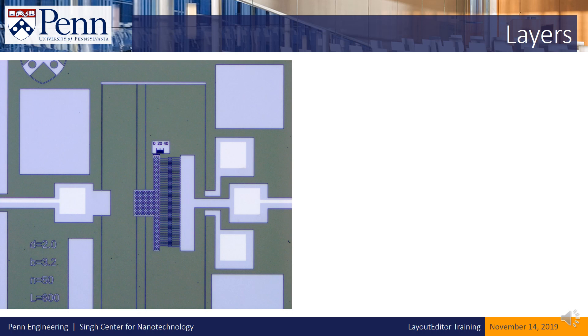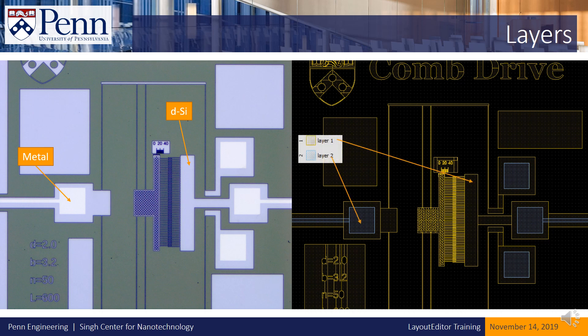The next concept is layers. To understand layers, let's look at a real example — a device made at the QNF using the design from the previous slide. The white-looking material is metal and the purplish-looking material is device silicon. The design corresponds to two layers: layer 2 from the CAD ended up as metal on the wafer, and layer 1 ended up as device silicon. You don't have to assign specific materials to specific layer numbers — you could design the metal into layer 12 or layer 42 if you like. It's a flexible convention.